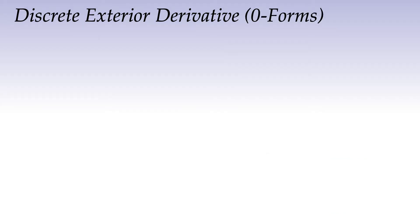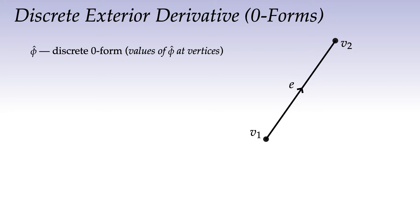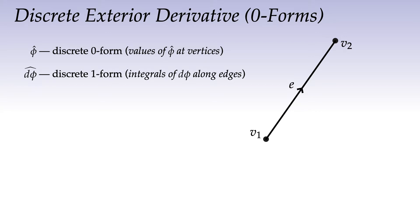Let's start with zero-forms. Say we have an edge E with vertices V1 and V2, and a discrete zero-form φ̂ — a number stored at V1 and a number stored at V2 — which we imagine are samples of a continuous function defined everywhere in space. We want to know: if we were to take the derivative of this continuous function φ and integrate it along the edge, what value would we get for our discrete one-form dφ̂?